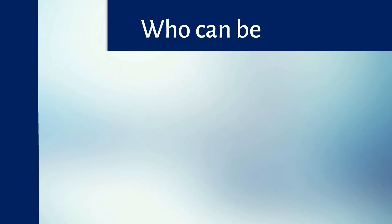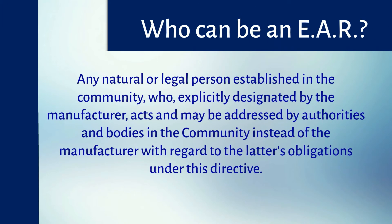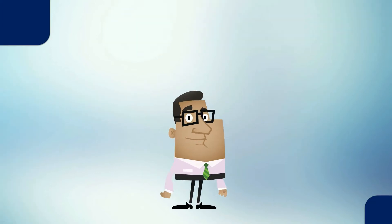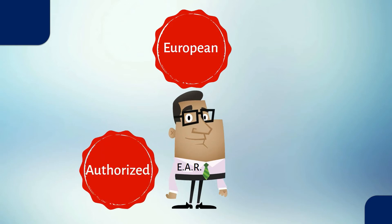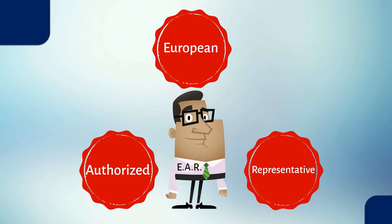Who can be an EAR? In short, the EAR must be European, meaning he must be established in the community. Authorized means he is designated by the manufacturer. Representative means he agreed to represent the manufacturer.